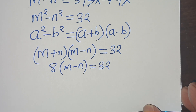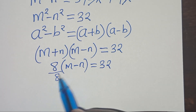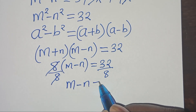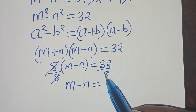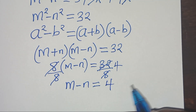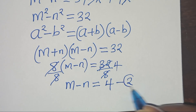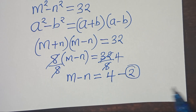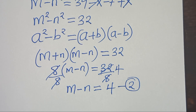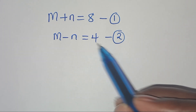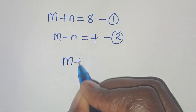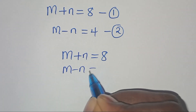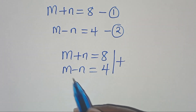Dividing both sides by 8, we get m minus n equals 4. Call this equation 2. Now equation 1 and equation 2 form a system of two equations.